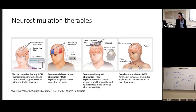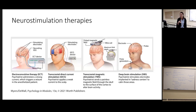The neurostimulation therapies apply some kind of electricity or magnetic energy to the skull surface, or even directly to a neuron if using implanted electrodes. That can work by scrambling activity or through inhibition.